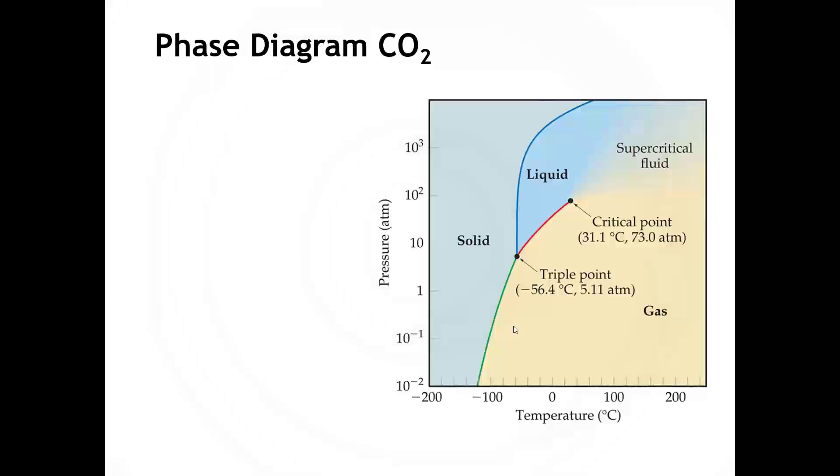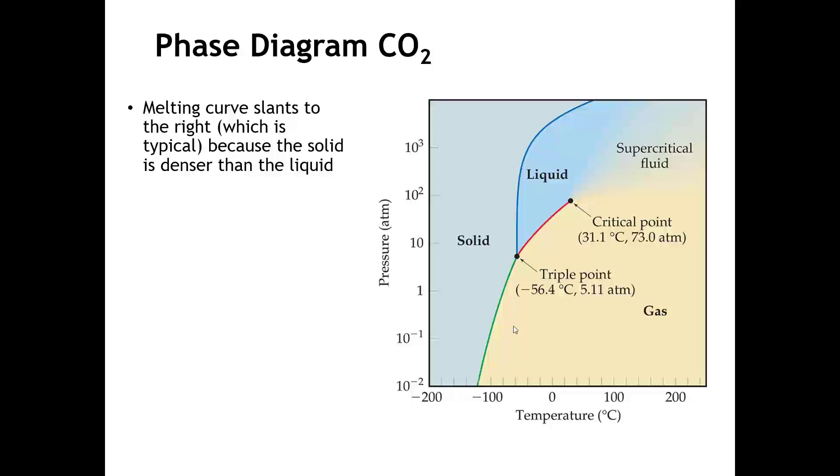Let's now look at the phase diagram of carbon dioxide, which is shown here. Generically, it looks pretty similar. However, there are some differences. First of all, even though the change isn't large, we see that the melting curve now is slanting a little bit to the right. And that's more normal behavior, because normally the solid is going to be denser than the liquid. So going to higher pressures is going to tend to favor the solid over the liquid. But the line is still pretty vertical, and that's because, as we've been talking about in this chapter, the density of a solid and a liquid aren't wildly different from one another.